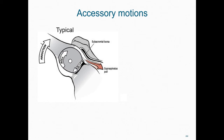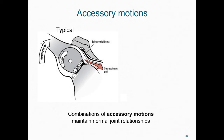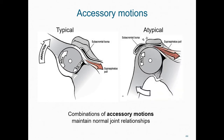These accessory motions keep the joint in place and are required for effective joint functioning. We can see this through a pathologic example. A classic pathologic example of a convex surface rolling without an offsetting slide shows the humeral head translating upward and impinging on the delicate tissues of the subacromial space.